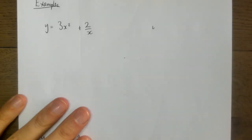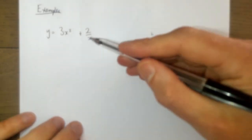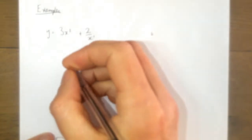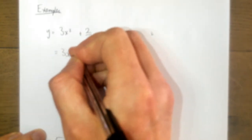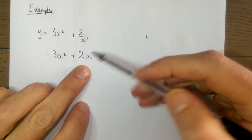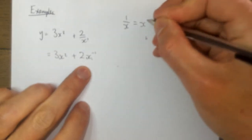We're going to link in our work on indices and powers. When differentiating, if you've got an x on the denominator - for example 2 over x to the power of 1 - it's easier to rewrite it using index laws. I rewrite it as 3x squared plus 2 times x to the minus 1, because we know from our work on indices that 1 over x is the same as x to the minus 1.